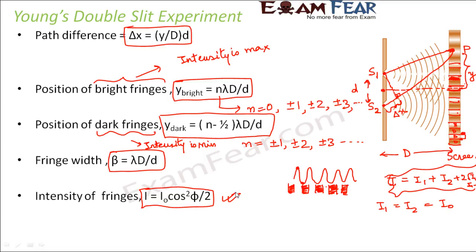For maximum intensity — at bright fringes — cos²(phi/2) equals 1, so the maximum intensity is 4·I0. I had missed the factor of 4 earlier, so the correct expression is I equals 4·I0·cos²(phi/2). For dark fringes, minimum intensity occurs when cos²(phi/2) equals 0, giving minimum intensity equal to 0.